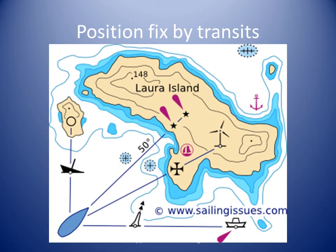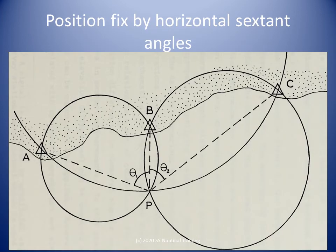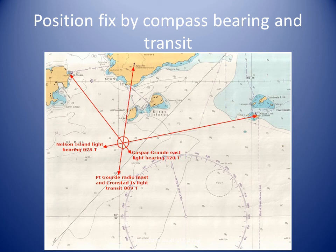A position line is usually either the direction of an object from us or the distance we are away from an object. A directional position line tells us we are on the line, but that is all. A distance position line tells us we are on the circle connecting all points that distance from the object, but that is all. However, where two or more position lines intersect is called a position fix. Two directional transit position lines, two horizontal sextant angles, or two compass bearings combined with a transit can all be used to generate a position fix.